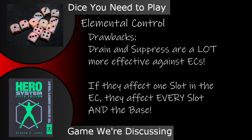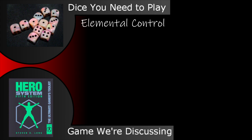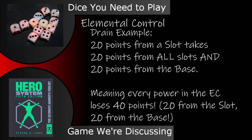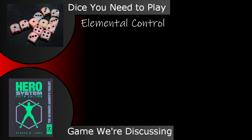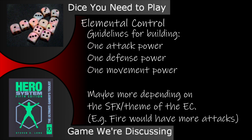One of the drawbacks to the elemental control is this: drain and suppress are much more powerful against an elemental control. If one slot is affected by a drain or suppress, all slots are affected, as well as the base. This means that 20 points of drain takes away 20 active points from the slot, as well as from every other slot in the elemental control, and 20 from the control itself, making every power effectively lose 40 active points. Elemental control is the most straightforward, but technically not available in 6th edition, though it could just as easily be ported in. The rulebook recommends one attack, one defense, and one movement power, though if your theme would be conducive to destruction such as fire and heat, or laser eyes, you could justify having various attack powers with it.